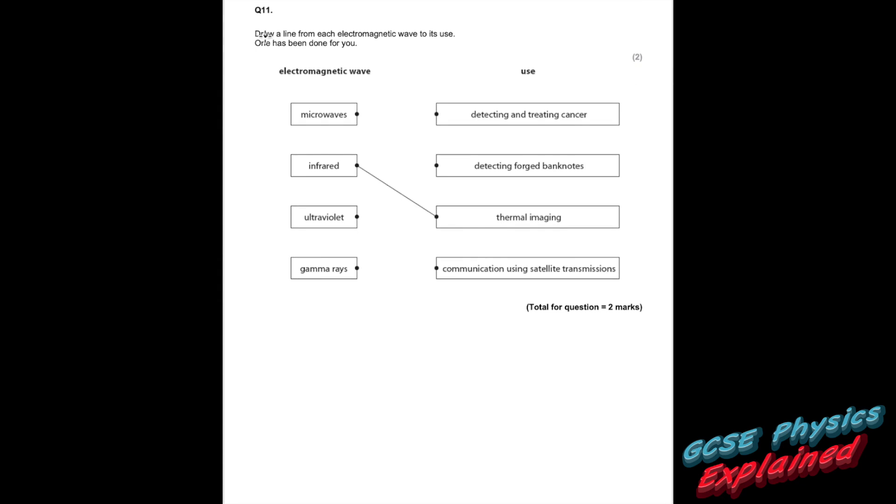Question 11. Draw a line from each electromagnetic wave to its use. One has been done for you. Microwaves, what do I use those for? Communicating with satellites. Infrared thermal imaging already been done. Ultraviolet, that is detecting forged banknotes. And gamma rays is detecting or treating cancer.